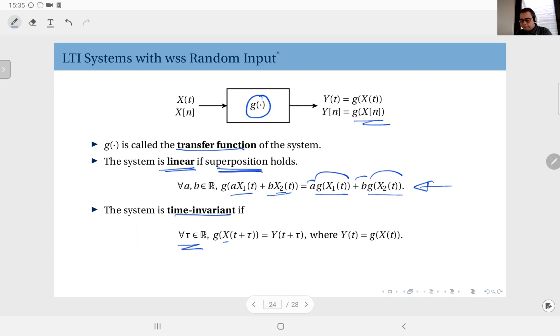If for all values of the time shift tau, the output of the signal when the signal is shifted by an amount of tau is exactly the same to the shifted version of the output when x(t) is applied. Let me repeat that.